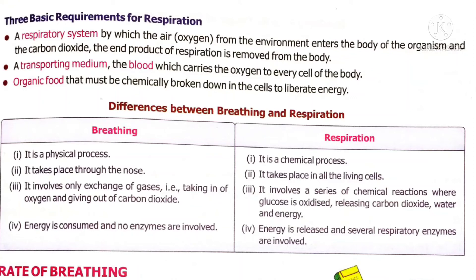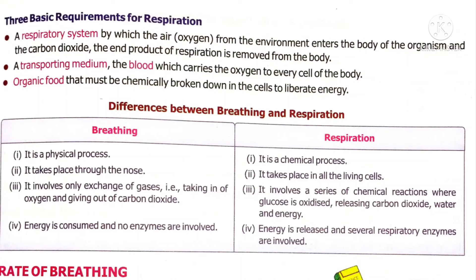Now we are moving to the three basic requirements for respiration. The three basic requirements are: the respiratory system, a transporting medium, and organic food. The respiratory system involves air from the environment entering the body and carbon dioxide — an end product of respiration — being removed through the nose. The transporting medium is blood, a tissue that carries oxygen from the lungs to every cell of the body. Organic food involves the chemical breakdown of food in the cells to liberate energy, carried out by mitochondria using oxygen.